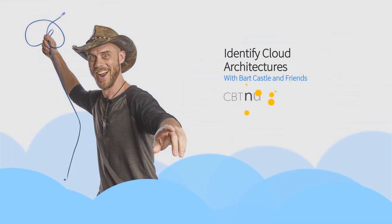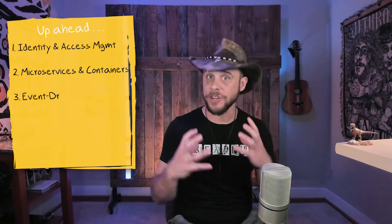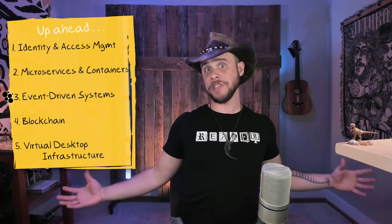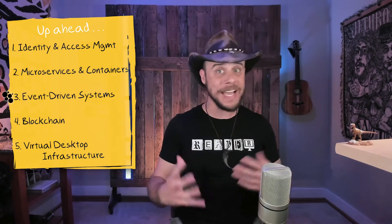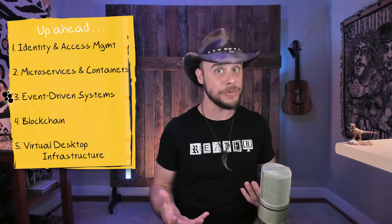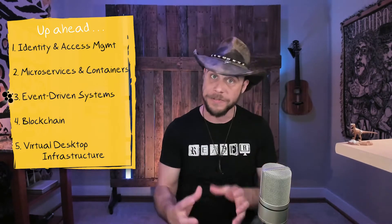Hey, friend. Welcome back to Identifying Cloud Service Architectures. In our last lesson, we started talking about the idea of breaking applications apart into their components and then distributing those components, thereby allowing them to work kind of autonomously from one another, grow and be provisioned and built and managed separate from one another.